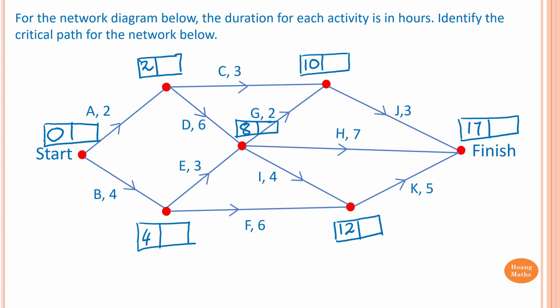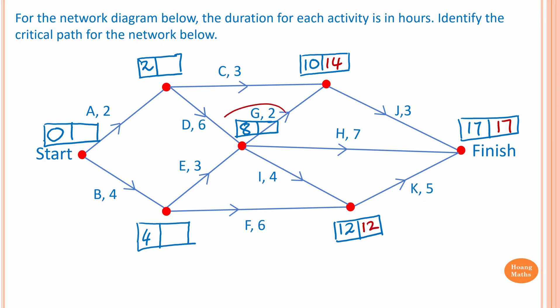Now we use backward scanning to work out the latest starting times — reverse the process: instead of adding we subtract, and instead of taking the largest value we take the smallest. The finish is seventeen hours. Seventeen minus three is fourteen, and seventeen minus five is twelve.